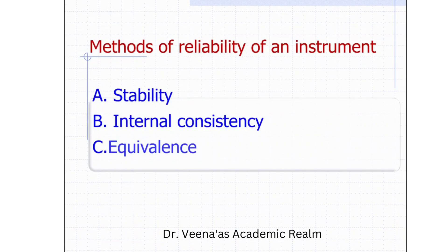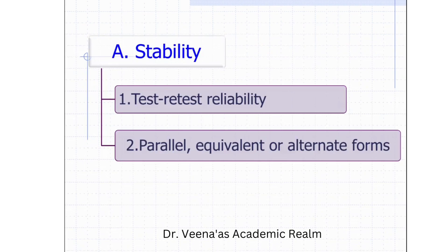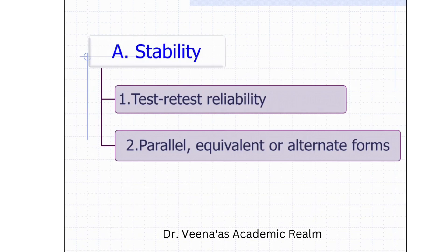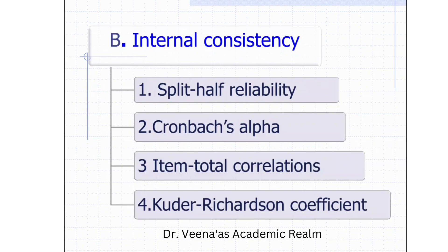As we have seen, the methods of reliability of an instrument — that is, the tool — include stability, internal consistency, and equivalence. These three types also have different subtypes. Under stability, there is test-retest reliability, and parallel or equivalent alternate form. The most important for nursing research is test-retest reliability, commonly used in nursing research. Under internal consistency there are split-half reliability, Cronbach's alpha, item-total correlations, and Kuder-Richardson coefficient, but the split-half method is commonly used in nursing research. The third type is equivalence, which includes inter-rater or inter-observer reliability and parallel or alternate form — with inter-rater or inter-observer reliability being commonly used in nursing research.